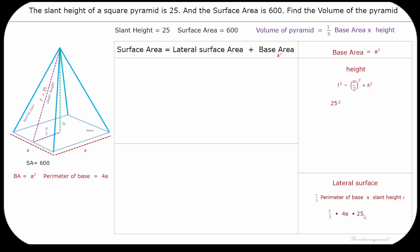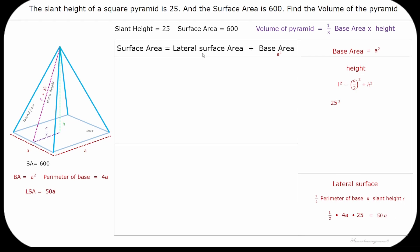Let's substitute 4A for the perimeter and slant height 25, and the lateral surface area is 50A. Let's substitute the lateral surface area and base area into the formula for surface area and rearrange it as a quadratic equation and solve for A.